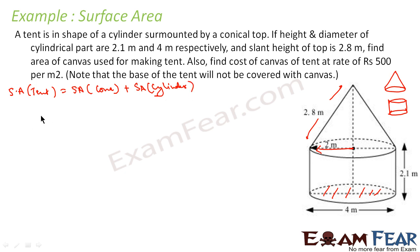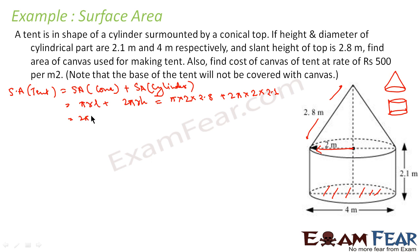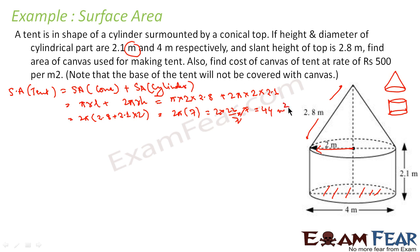Surface area of tent = curved surface area of cone + curved surface area of cylinder = πrl + 2πrh. Substituting values: π × 2 × 2.8 + 2π × 2 × 2.1. Taking 2π as common: 2π(2.8 + 2.1 × 2) = 2π(2.8 + 4.2) = 2π × 7. Putting π = 22/7: 2 × 22/7 × 7 = 44. The surface area is 44 m².